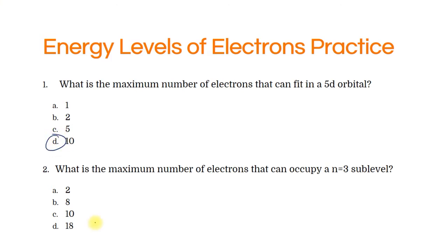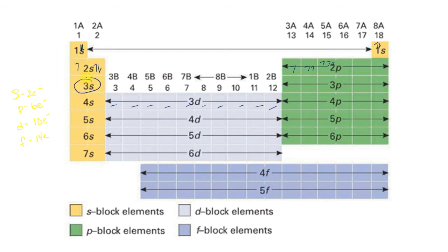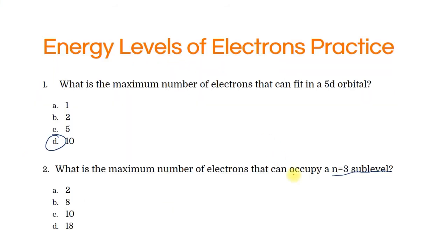This question asks: what is the maximum number of electrons that can be occupied in an n=3 sublevel? That means anywhere we see the number 3. Here's 3s — that's 2 electrons. The 3d has 10. Then 3p has 1, 2, 3, 4, 5, 6 — that's 6 electrons. Adding them all up: 2 plus 10 plus 6, we can fit 18 electrons in the n=3 level.